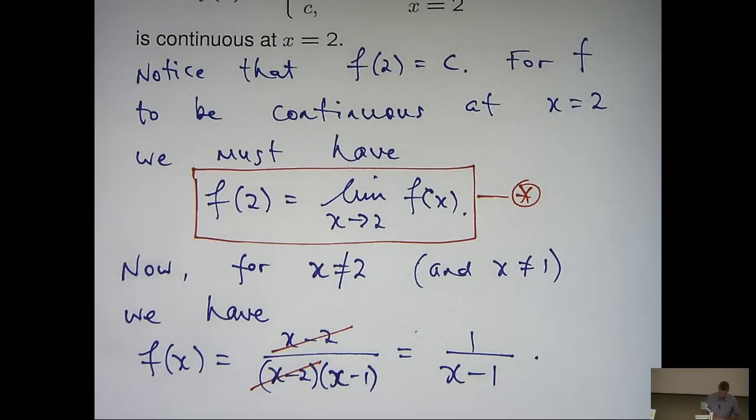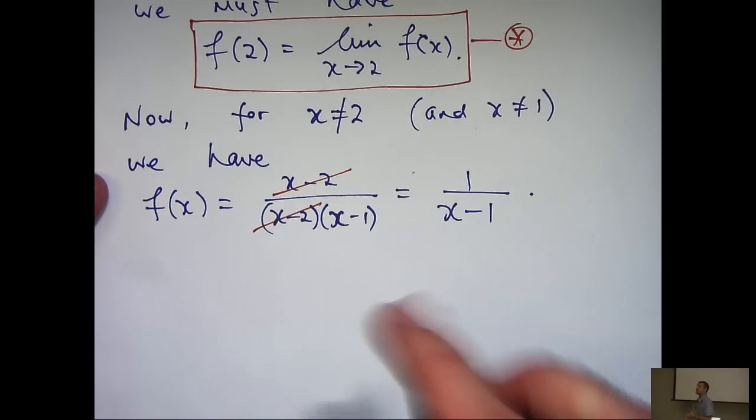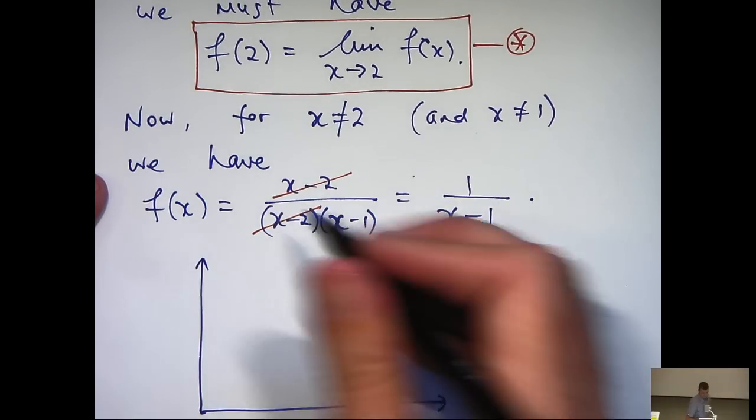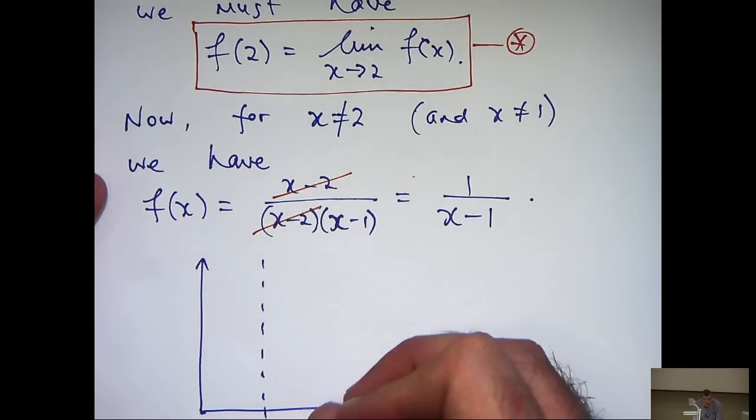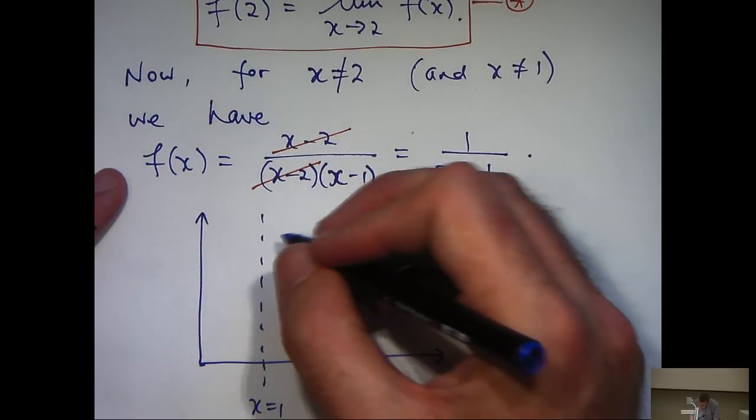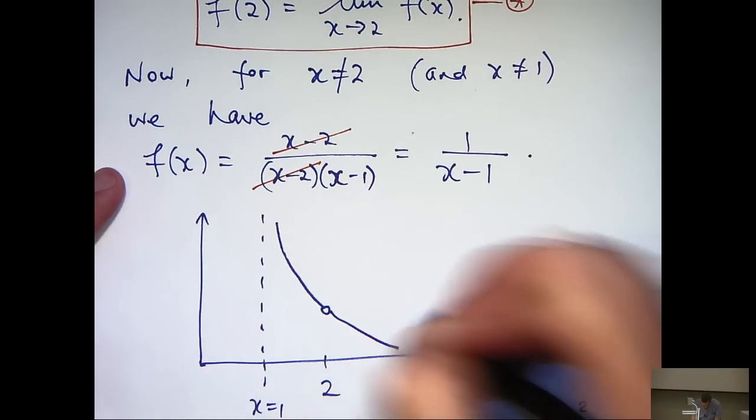Now, to give some geometric insight into the problem, I'm actually just going to sketch this curve for x not equal to 2. So this is going to have a vertical asymptote at x equals 1. And the graph is going to look something like this.